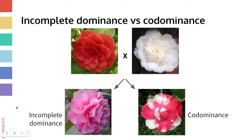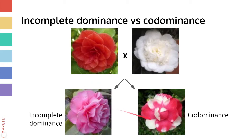One way to remember the difference between incomplete and codominance is that incomplete starts with an I, and the incomplete dominance pattern is where you get something that's in between the two phenotypes of the two parents — so incomplete dominance is in between, it's a blended phenotype. And codominance — the second letter is an O, which reminds me of spots or splotchiness. So anytime you're seeing splotchy patterns where you're seeing both phenotypes present at the same time, that's going to be codominance.